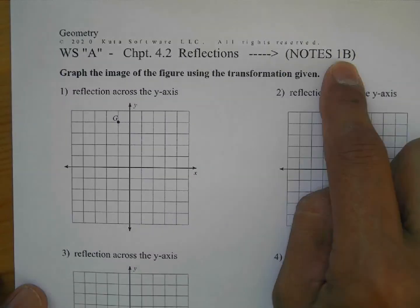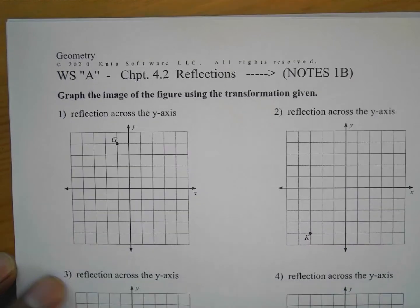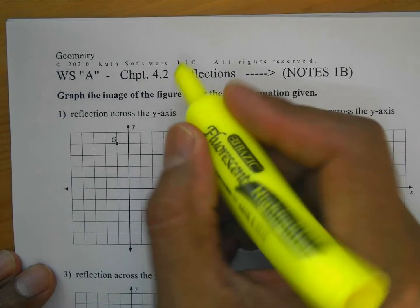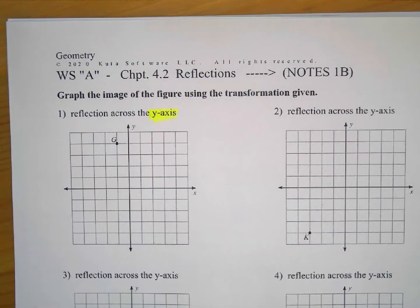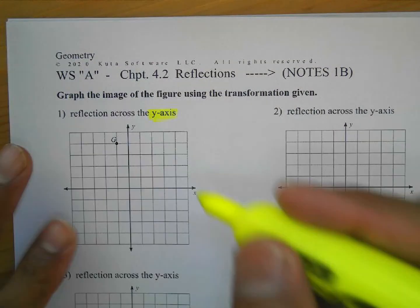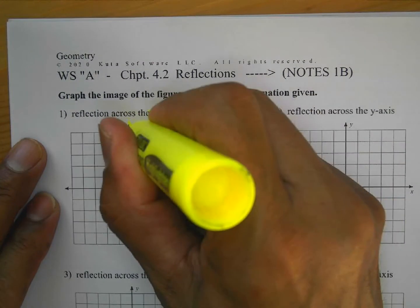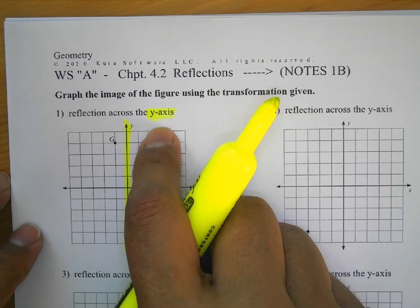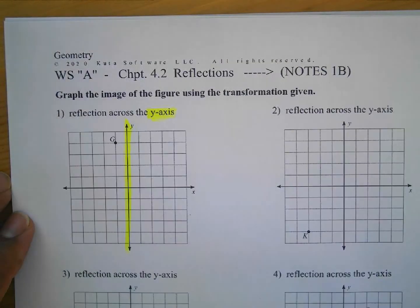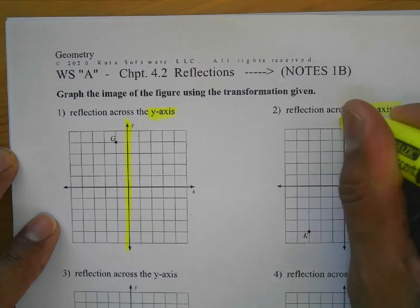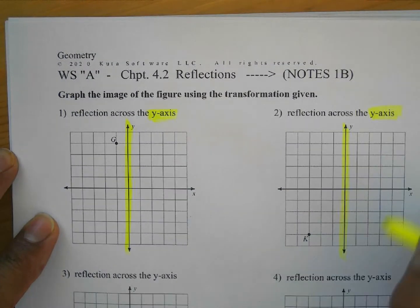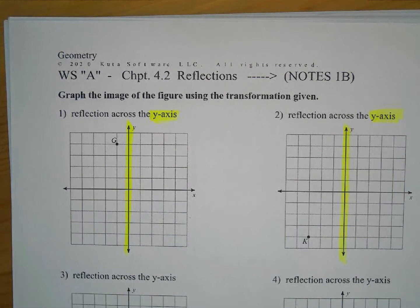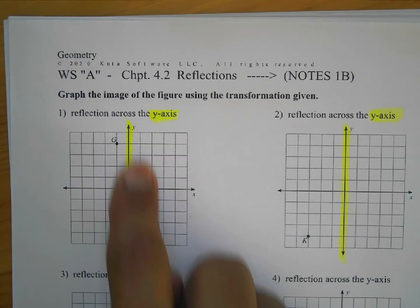Okay, here's the second part — notes 1b. It's still for worksheet A. We're still doing reflections, but now it's going to be across the y-axis. This is the line we're going to be doing the reflection along. You have to be careful: sometimes the problems are going to ask you to reflect along the x-axis, which we did in the first video, but now we're reflecting points or shapes along the y-axis.